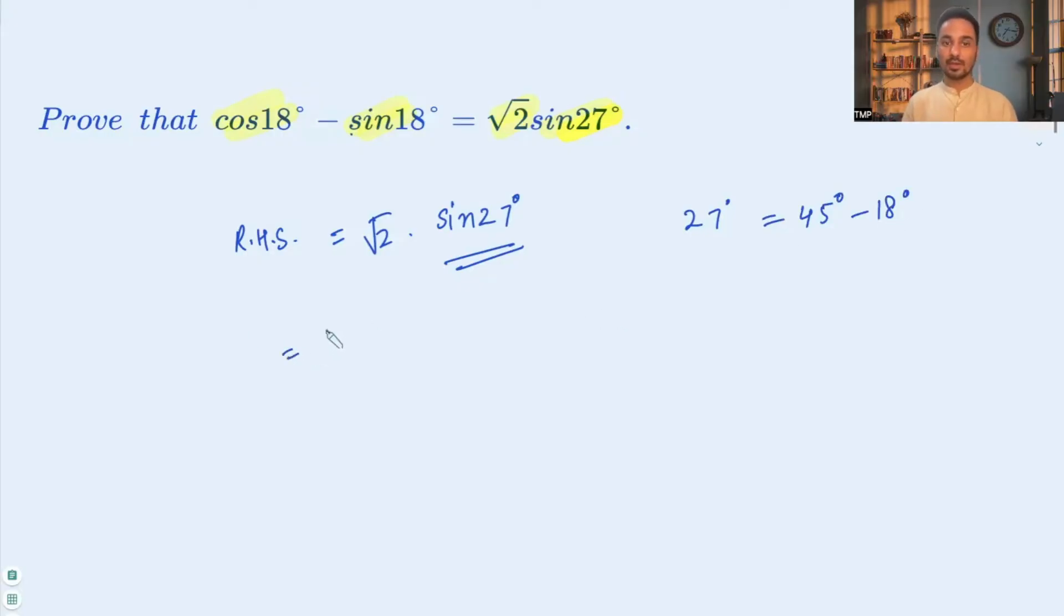So the right hand side will change to square root 2 times sin of 45 degrees minus 18 degrees. This is now sin of A minus B, and we know that sin of A minus B is equal to sin A cos B minus cos A sin B.